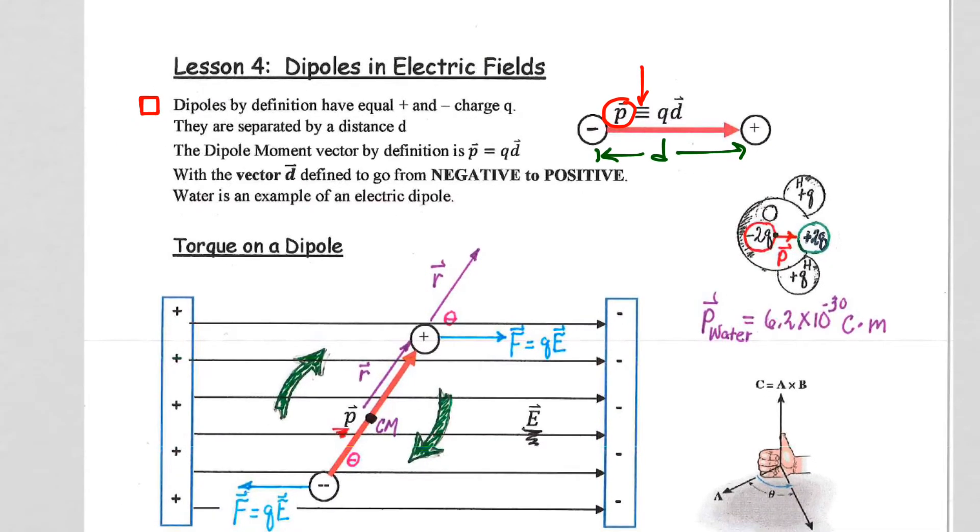By definition, the p vector and the d vector always go from negative to positive. I always remember that as being the opposite of the electric field. The electric field between positive and negative charges goes from positive to negative.